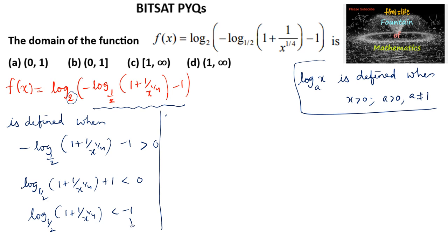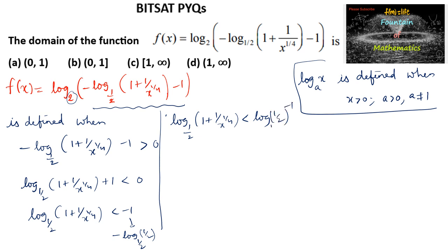We can rewrite negative 1 as negative log base (1/2) of (1/2), and bring the minus 1 as an exponent: log base (1/2) of (1 + 1/x)^(1/4) is less than log base (1/2) of (1/2)^(−1). This uses the logarithm property that log(a^m) = m·log(a).